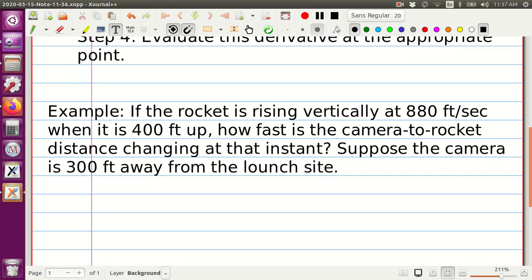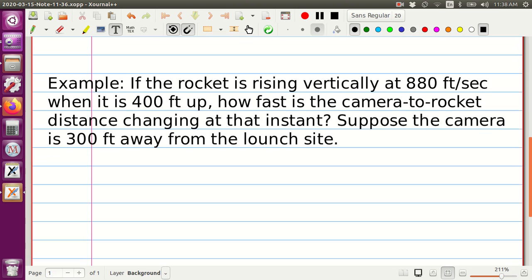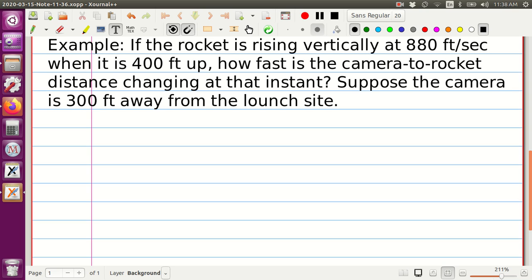Let's look at the next example. We have a rocket that is rising vertically at 880 feet per second. When it's 400 feet up, how fast is the camera to rocket distance changing at that instant? We will suppose that the camera is 300 feet away from the launch site. Let's try to create a picture for this situation.